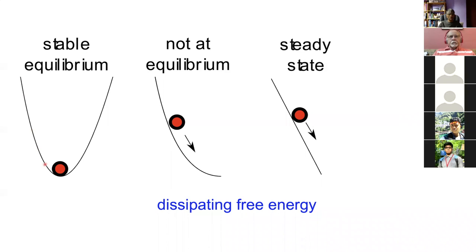This is what we call stable equilibrium: if I give this ball an infinitesimal perturbation it will come back to its original location. This clearly is not equilibrium because the ball is rolling down this non-linear hill and therefore it's dissipating free energy as it rolls down.